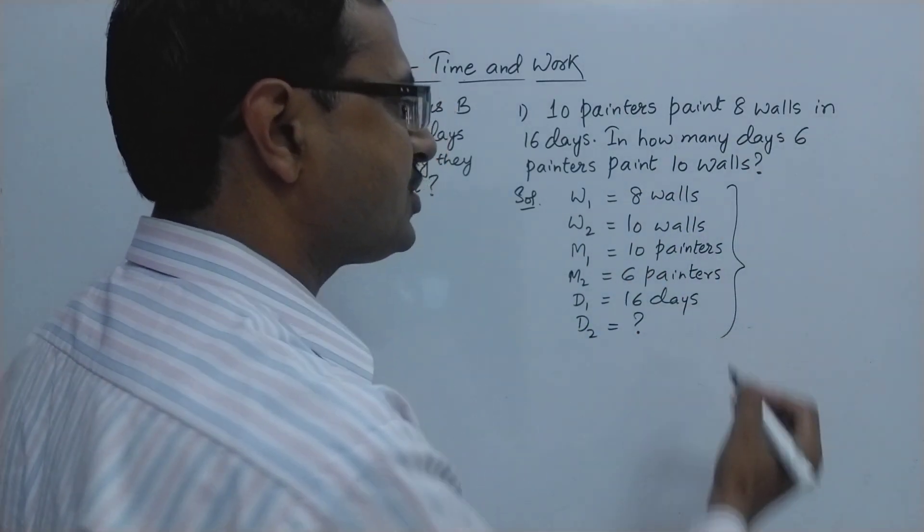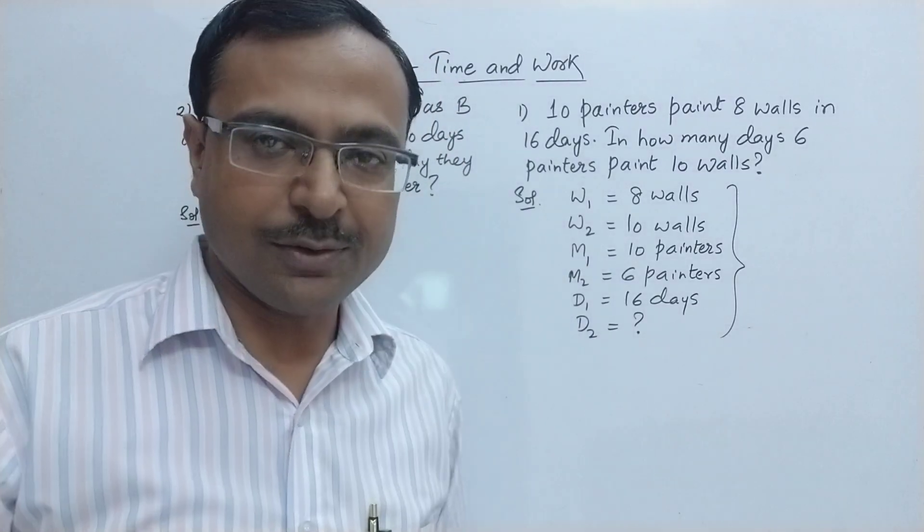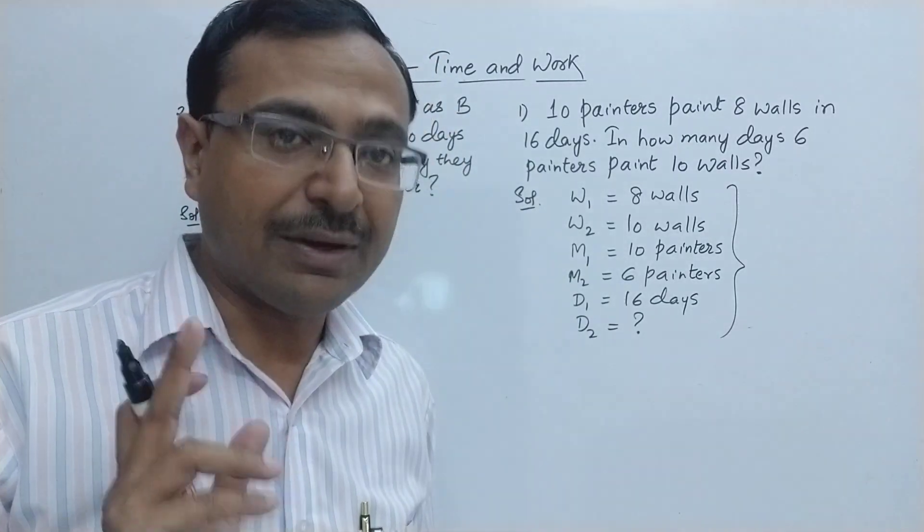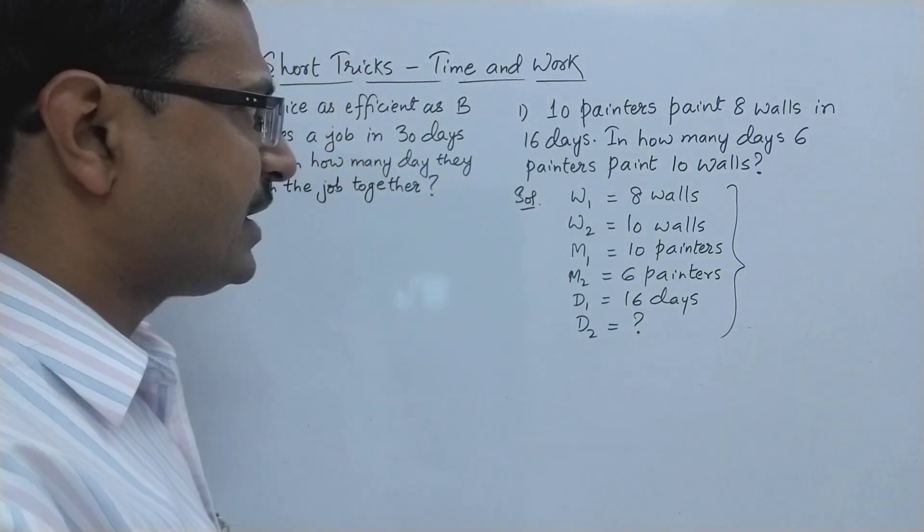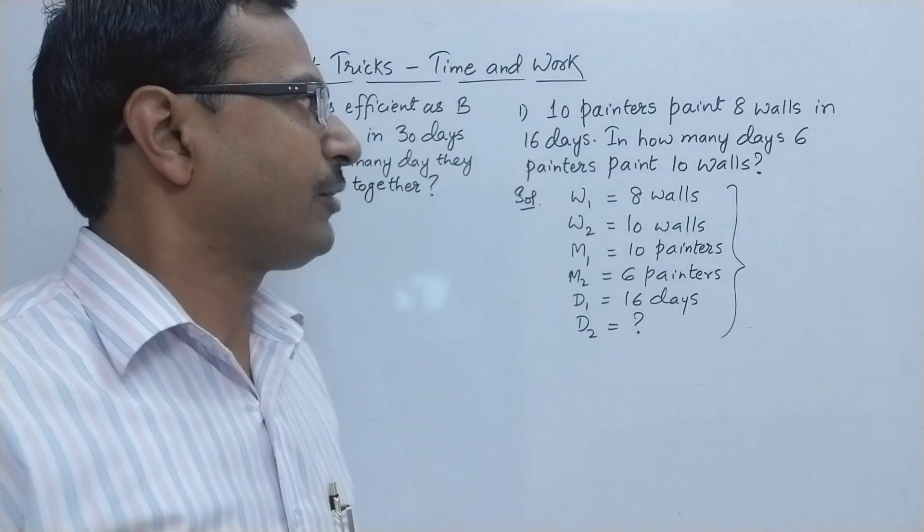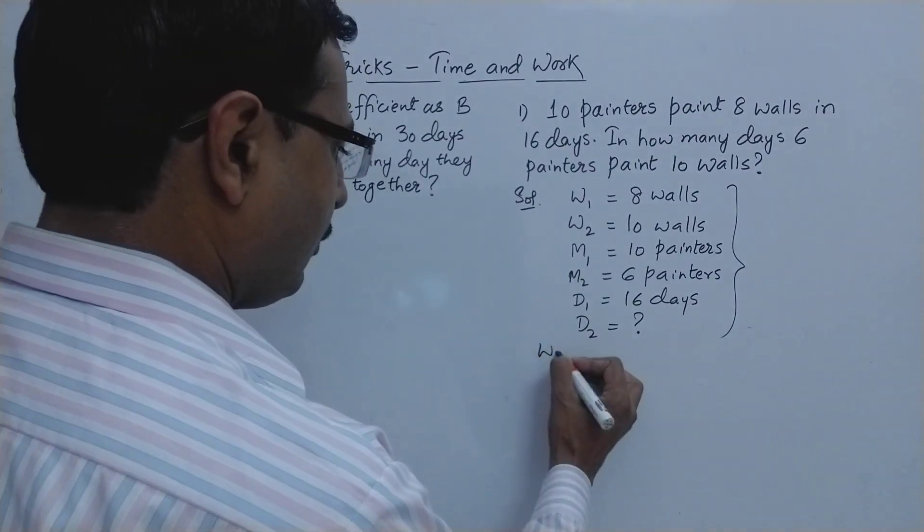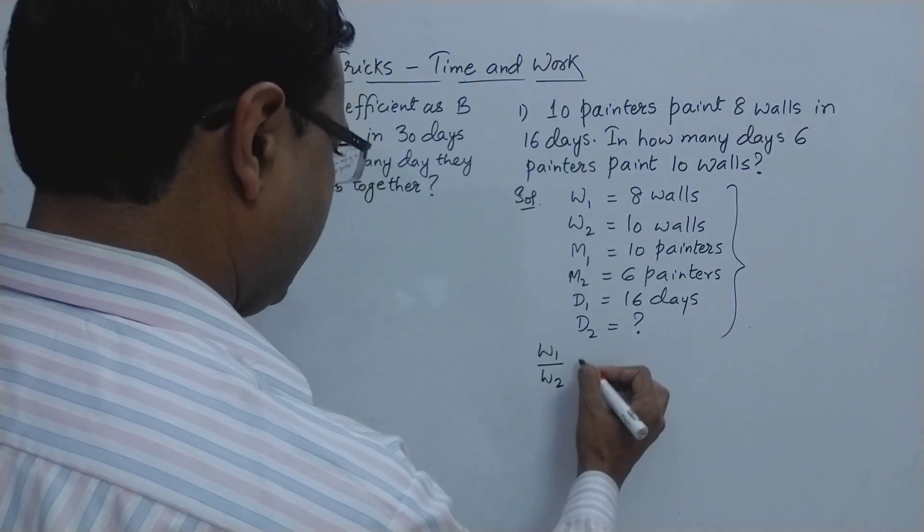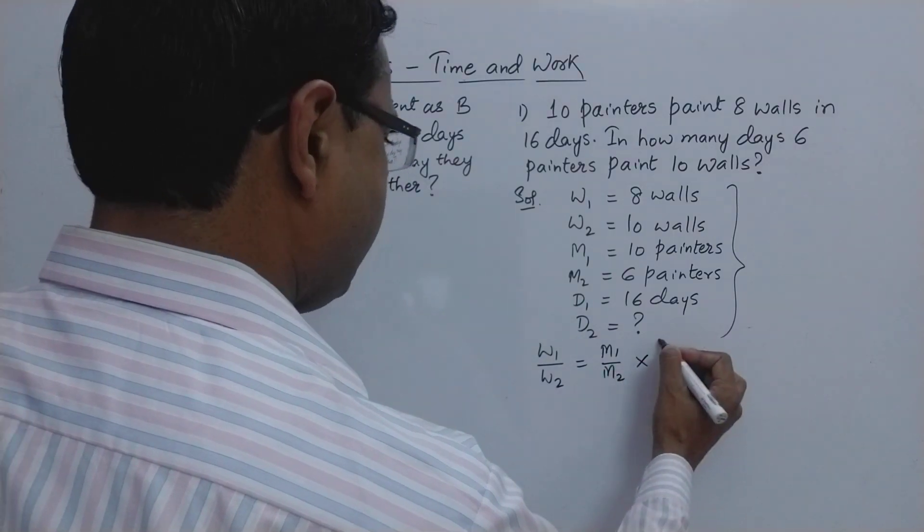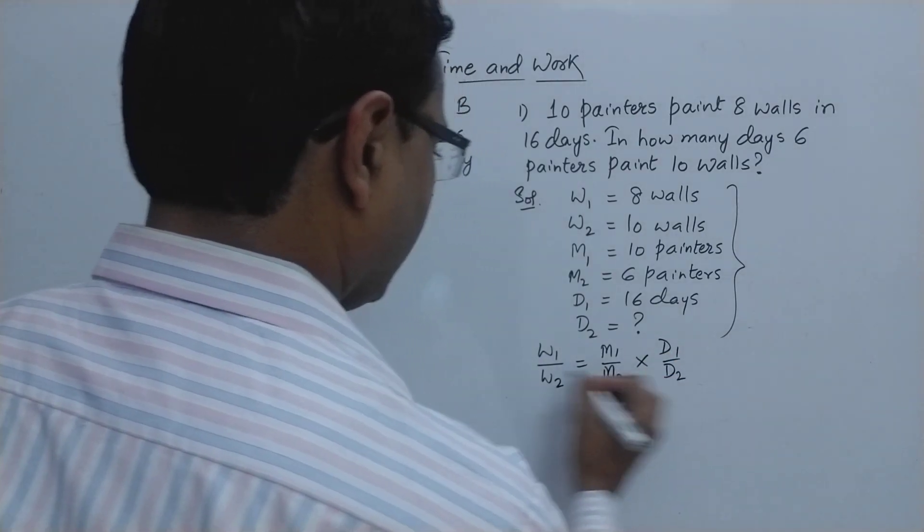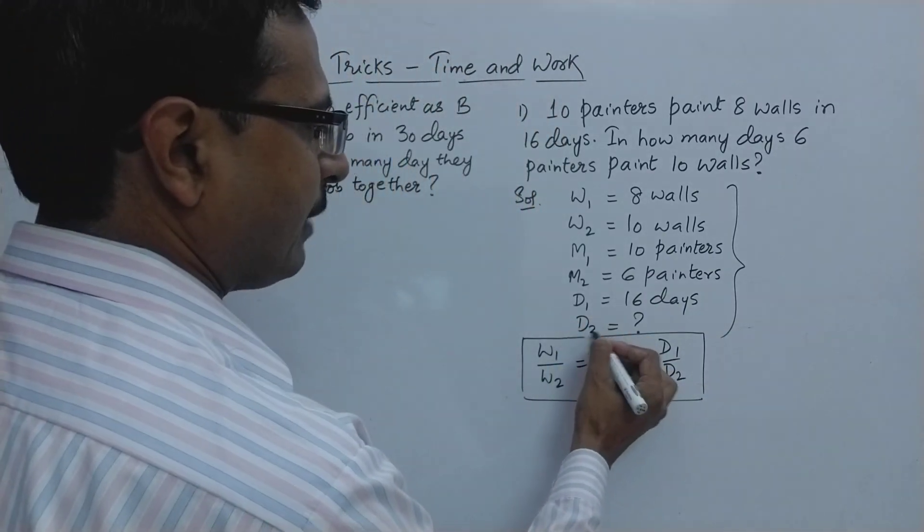Now this is the nomenclature of this problem and once you are aware of these 6 variables, out of this you have to find one variable, then you use the direct proportionality method. So just use the concept: W1 upon W2 will be equal to M1 upon M2 multiplied by D1 upon D2. Now this is the direct shortcut for solving problems of these kinds of problems of time and work.